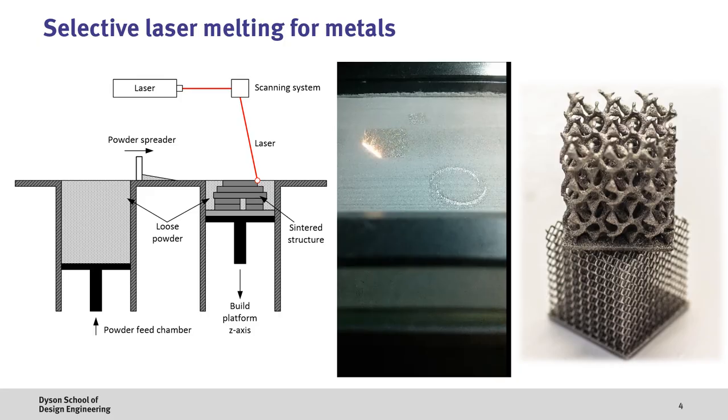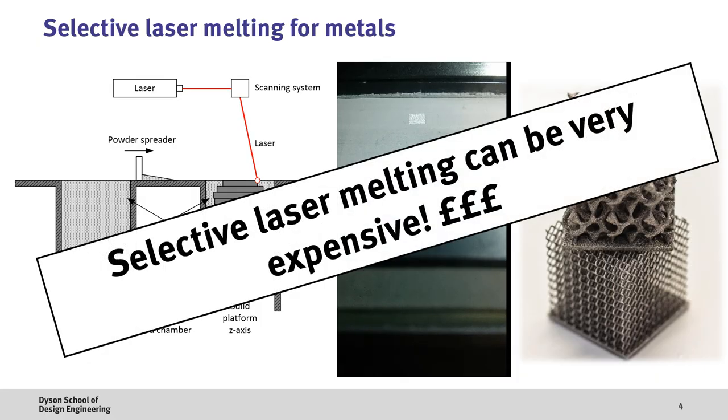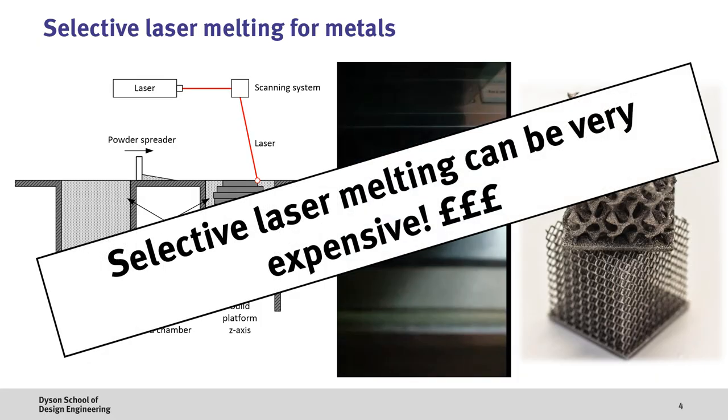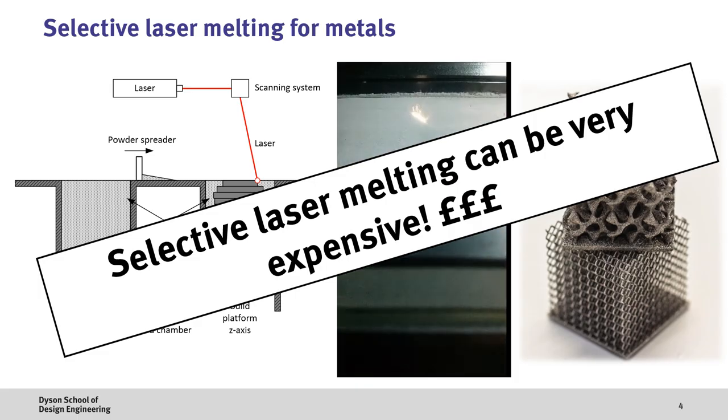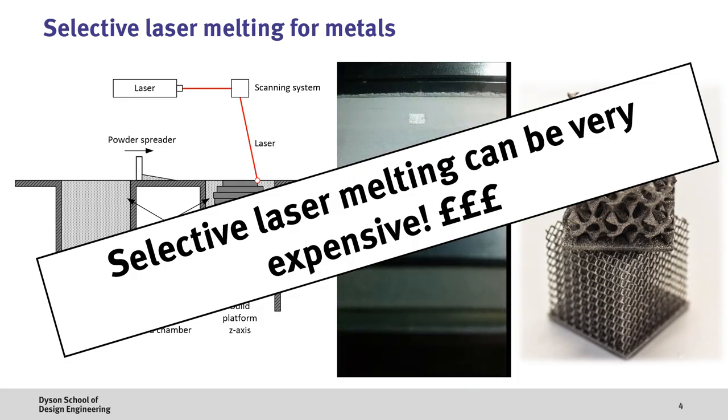However, whilst this approach can make impressive components, the cost of a selective laser melting machine can often be in excess of 100,000 pounds due to the expensive lasers, inert gases, and other supporting systems. Thus, there is a need to develop lower cost metal additive manufacturing systems.